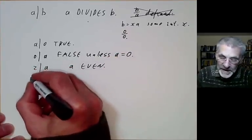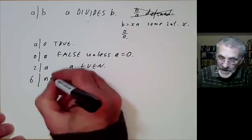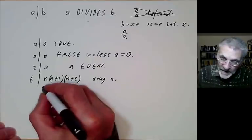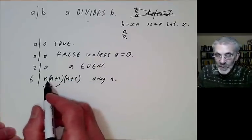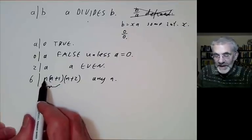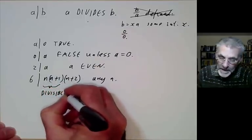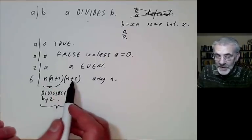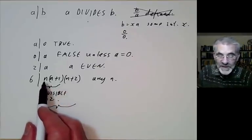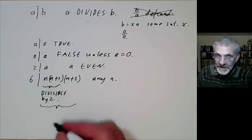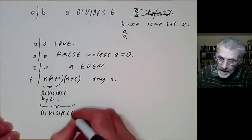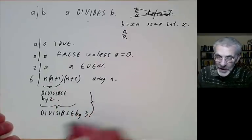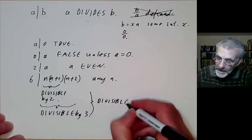Let's do something more interesting. We can show that 6 divides n(n+1)(n+2) for any integer n. Well, n times n+1 is always even because n is either even or odd — if n is odd then n+1 is even, so this is divisible by 2. Pushing this further, one of these three consecutive numbers is divisible by 3, because n must be of the form 3k, 3k+1, or 3k+2, and in any case one of the three numbers is divisible by 3. So this number is always divisible by both 2 and 3, and since 2 and 3 are coprime, it's divisible by 6.